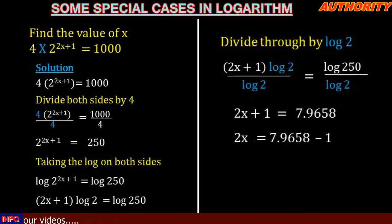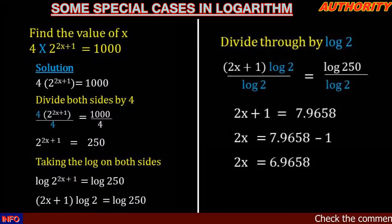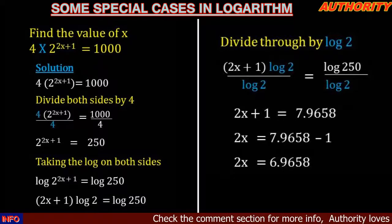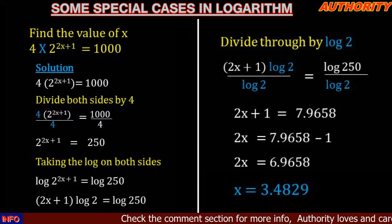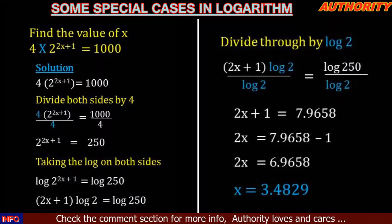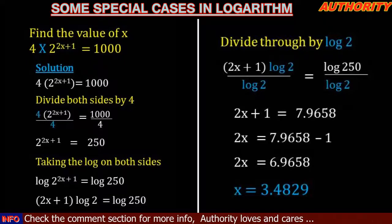Now let's take 1 to the other side. We're going to have 2x equal to 7.9658 minus 1, which gives us 2x equal to 6.9658. Dividing both sides by 2, we get x equal to 3.4829.